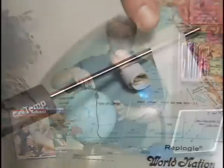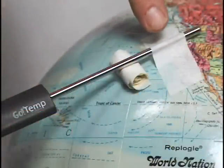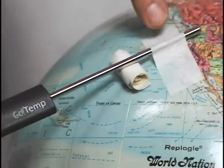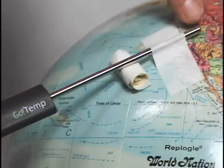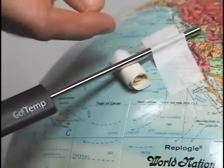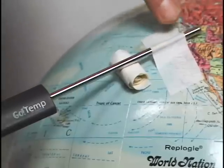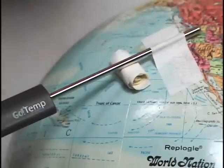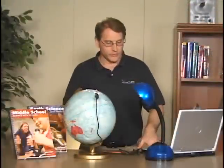We've attached a GoTemp sensor to the globe in the northern hemisphere and taped it so it was just touching the globe. To do that, we put a little roll of tape under here to prop it up, then taped it down firmly to that section of the globe.